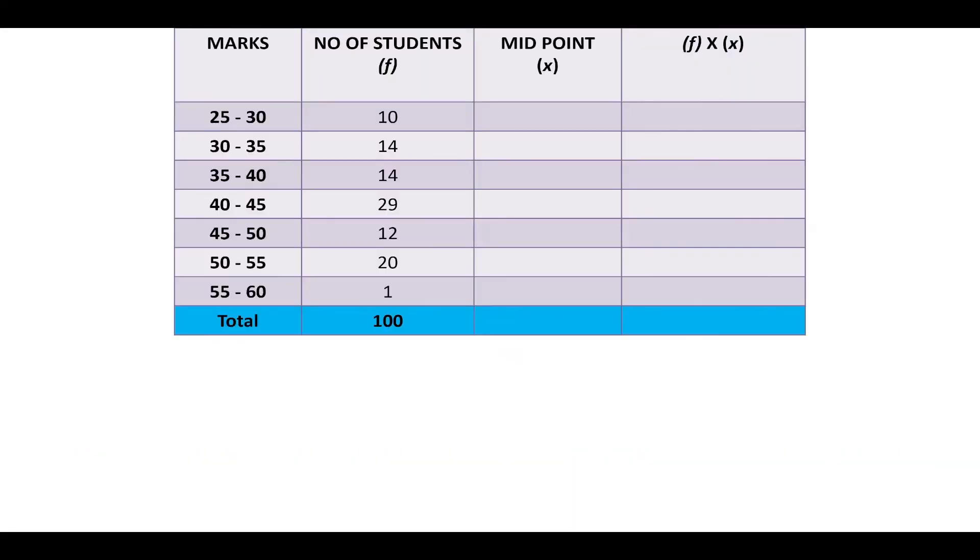Let us now understand this with a small example. So here, the midpoint of the first class will be 27.5. And the product of frequency and midpoint will be 275. Similarly, we will get all other values. Now getting the summation of frequency into the midpoint will be 4165. So directly substituting these values in the formula will get the arithmetic mean as 41.65.